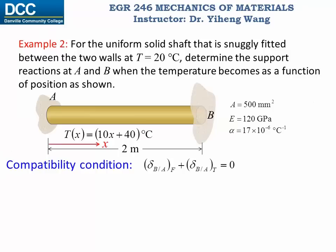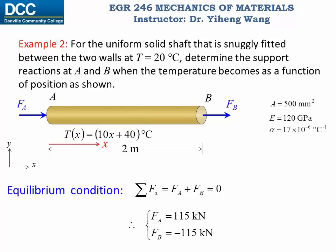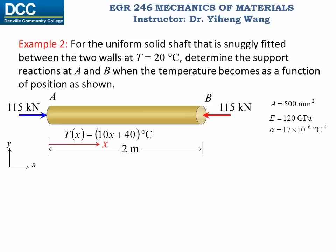Using the compatibility condition — the displacement caused by force plus the displacement caused by temperature change equals zero — we substitute: −FA · L / (A · E) + 3.825 × 10⁻³ = 0. Substituting in the length, cross-sectional area, and Young's modulus, FA is the only unknown, and we solve to get FA = 115 kN. Substituting into the equilibrium equation FA + FB = 0, we get FB = −115 kN. The negative sign for FB indicates its direction is opposite to what was drawn in the free body diagram.